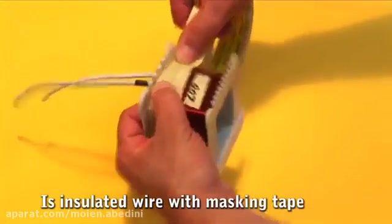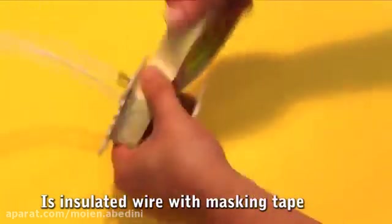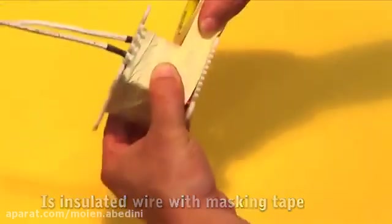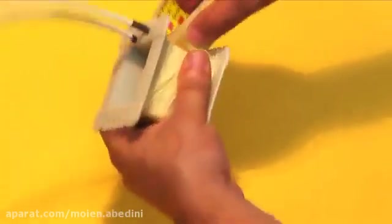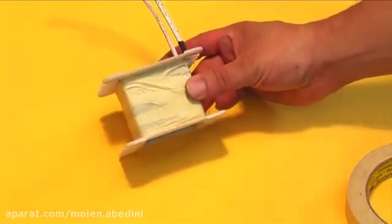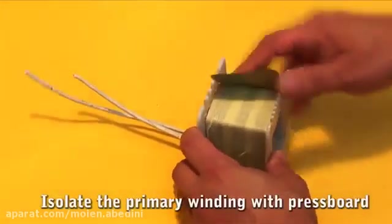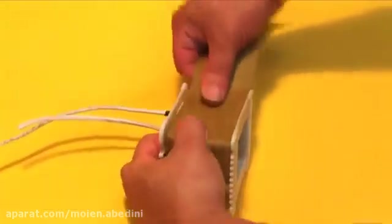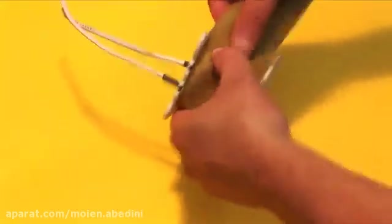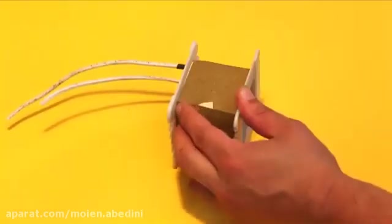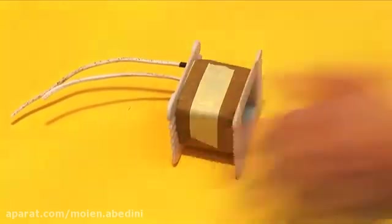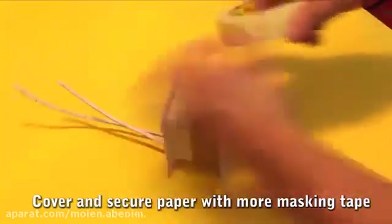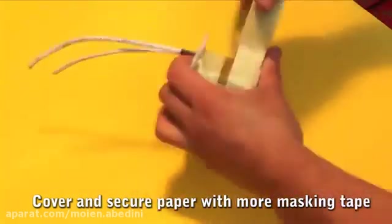Isolating the primary winding. The primary and the secondary windings are isolated from each other with masking tape and wax paper or press board. The wax paper should cover the entire wire and secure with masking tape. Then the paper is covered with more tape. Make sure there are no spaces through which the primary can touch the secondary windings.